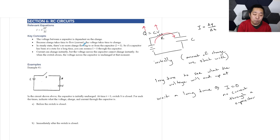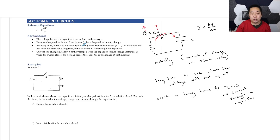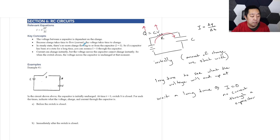The voltage cannot jump instantaneously across the capacitor — it takes time for the charge to actually show up there. But the current can change instantly. When you flip a switch, the current through a capacitor can change instantly; it's just that the voltage cannot do that immediately.